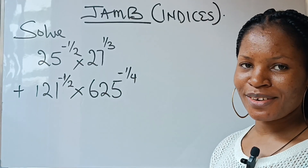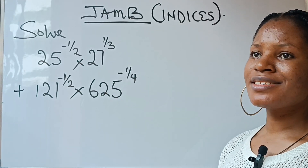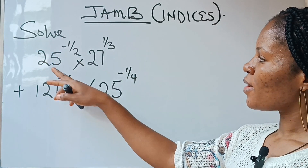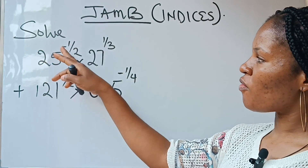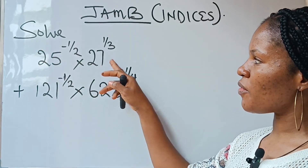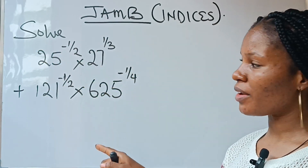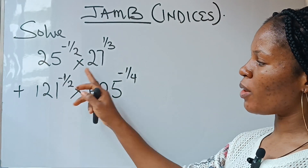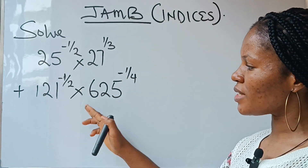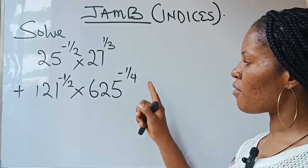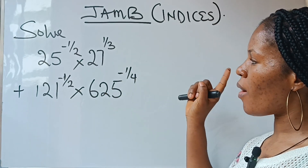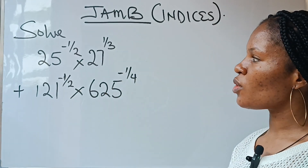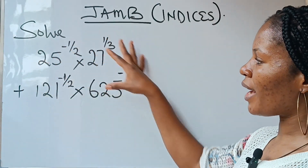Welcome to my channel. In today's class, we are asked to solve 25 raised to the power of minus 1 over 2 times 27 raised to the power of 1 over 3, added to 121 raised to the power of minus 1 over 2 times 625 raised to the power of minus 1 over 4. This comes under indices.